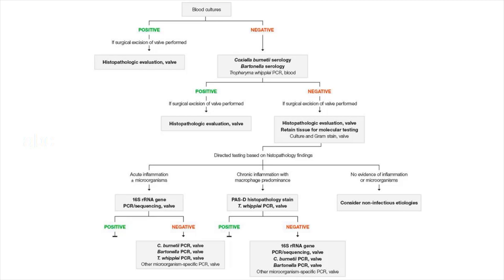A multimodal testing strategy for diagnosis of endocarditis employing culture, serology, histopathology, and molecular analyses is essential for optimal sensitivity and specificity in identifying an infectious etiology. A proposed testing strategy is shown. Notably, this algorithm should be applied in the context of clinical evaluation of the patient and other findings, such as echocardiography, supportive of a diagnosis of infective endocarditis. Positive blood cultures are the standard means of microbial diagnosis. Blood cultures should be collected prior to initiation of antibiotic therapy. In cases of culture-positive endocarditis with two or more positive blood cultures, no additional microbiology testing is necessarily needed, although histopathologic evaluation of valve tissue, if excised, is typically performed to confirm the diagnosis. In cases of culture-negative endocarditis, Coxiella burnetii and Bartonella serologies should be performed and consideration given to performing Tropheryma whipplei PCR on blood.